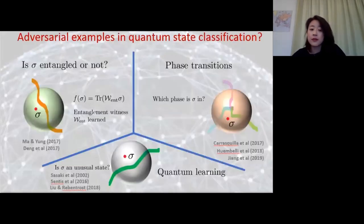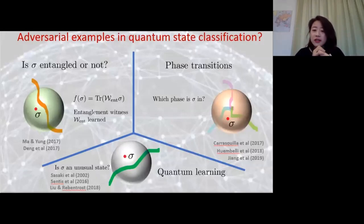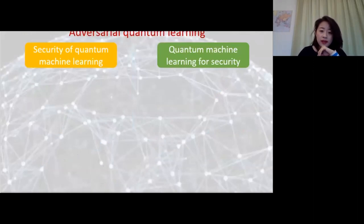What about in the quantum setting? There are also quantum machine learning algorithms for classification, where we might want to classify different types of quantum data—for example, is a quantum state entangled or not, or are we in a quantum phase transition? Does this mean we can also have quantum adversarial examples? So now we finally get to these questions of adversarial quantum learning.